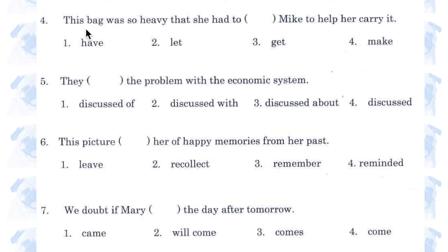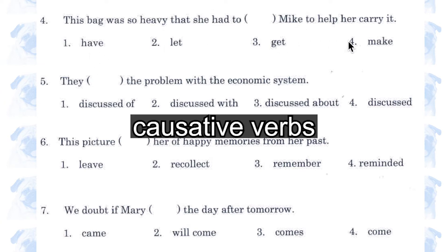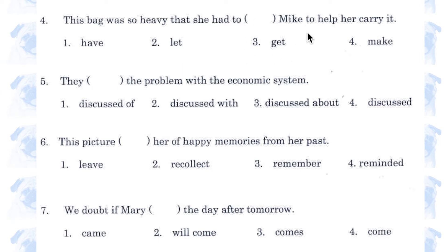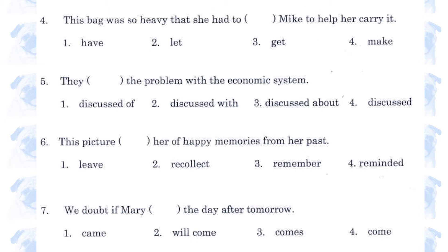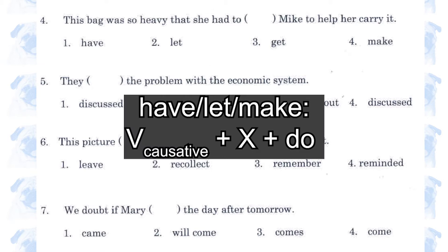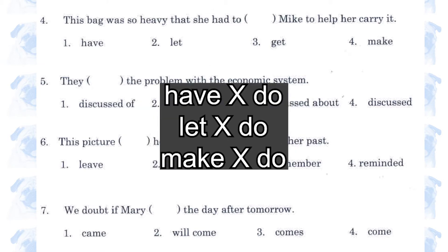Number 4. 'This bag was so heavy that she had to have / let / get / make Mike to help her carry it.' These four verbs are all causative verbs, but number 3, 'get', is the only verb where you can put the word 'to' after Mike. The other three verbs take the form: causative verb plus person plus do — for example, 'have you do', 'let you do', and 'make you do'.